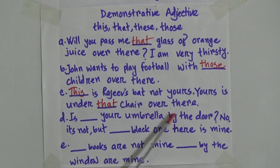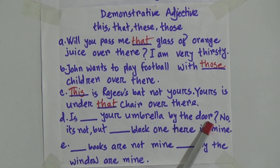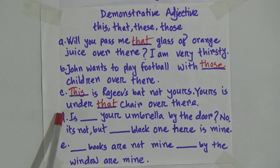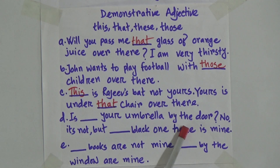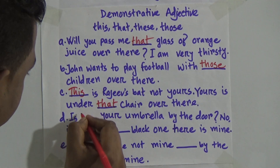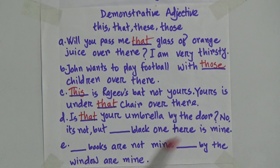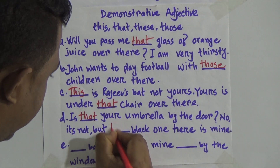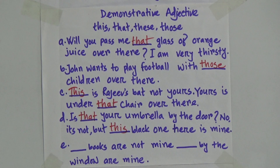Number D: is gap your umbrella by the door? That means this door is not nearby you. So: is that your umbrella by the door? No, it's not. But gap black one here is mine. Mark this — here means it is near about you. So the answer is: this black one here is mine.